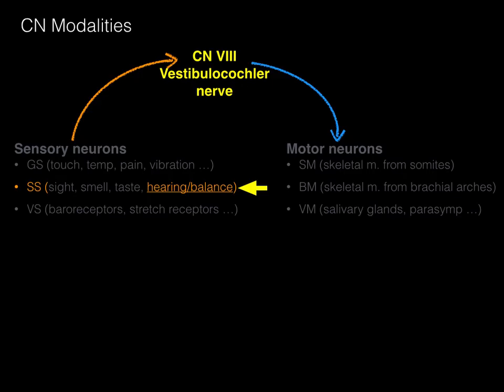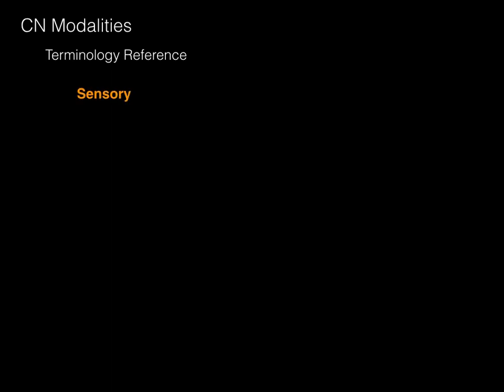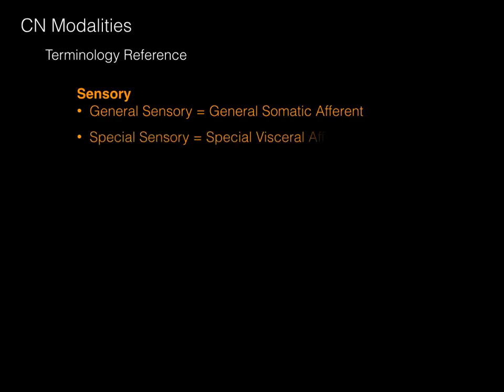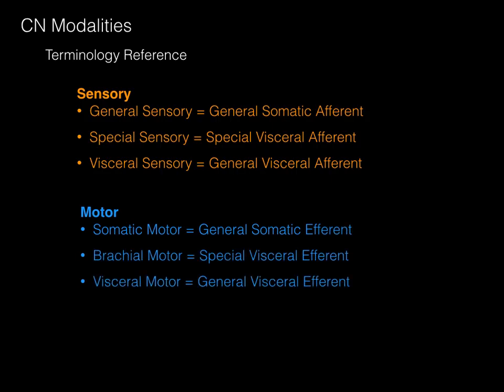The key point is that cranial nerves are nerves — a collection of neurons — and what modalities they contain depends on the specific nerve. That's your menu of sensory and motor cranial nerve modalities. As a terminology reference: general sensory is the same as general somatic afferent (GSA); special sensory equals special visceral afferent; visceral sensory equals general visceral afferent (GVA). These longer terms appear in the literature, but simplified terms — general sensory, special sensory, visceral sensory — are used here because they make more sense.